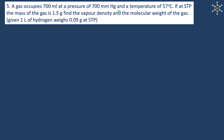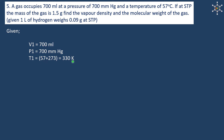A gas occupies 700 ml at a pressure of 700 mm mercury and a temperature of 57°C, which is 330 Kelvin. At STP, the mass of the gas is 1.5 grams. We need to find the vapor density and molecular weight, given that 1 liter of hydrogen weighs 0.09 grams at STP. STP means pressure is 760 mm mercury and temperature is 273 Kelvin.